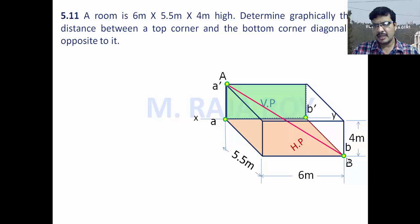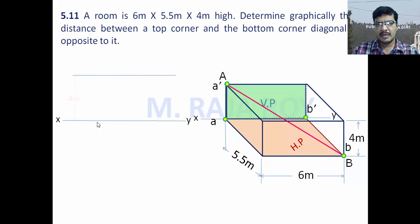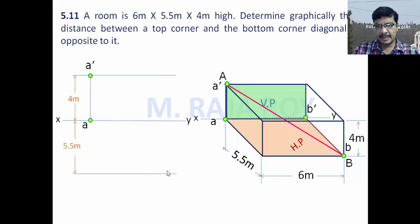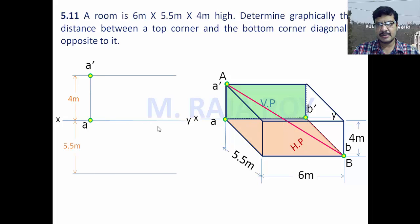This is B dash and this is B. Point B is at a distance of 5.5 meters from the x-y line, so after rotating the horizontal plane, this 5.5 meters will come below the x-y line. Now we represent this on the plane. Take the x-y line. At a distance of 4 meters from it, draw the locus and take A dash. Drawing a projector gives A on the x-y line. At 5.5 meters below the x-y line we get B, and at 6 meters distance we draw a projector to get B dash on the x-y line and B below.